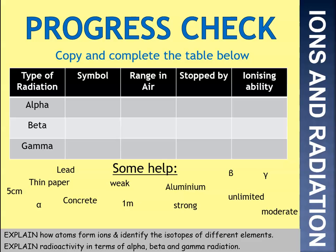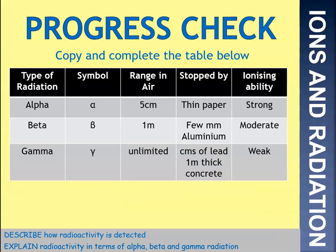Progress check — copy and complete the table. Alpha's symbol is the Greek letter alpha, range of 5 centimetres in air, stopped by paper, with a strong ionising ability. Beta is the Greek letter beta, range of 1 metre in air, stopped by a few millimetres of aluminium, and its ionising ability is moderate. Gamma has the symbol of the Greek letter gamma, unlimited range in air, stopped by centimetres of lead or 1-metre-thick concrete, and it's very weakly ionising.